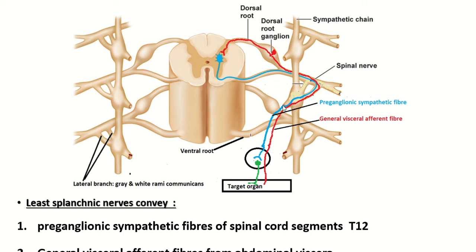The fiber then leaves the sympathetic ganglion as the medial branch and enters the renal ganglion, where it synapses with a postganglionic neuron. This postganglionic fiber forms the renal plexus and is distributed to the kidney. This particular portion is known as the least splanchnic nerve. The least splanchnic nerve also conveys general visceral afferent fibers, whose neurons are present in the dorsal root ganglia.